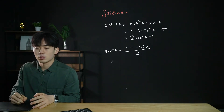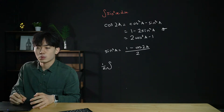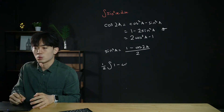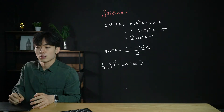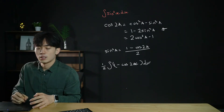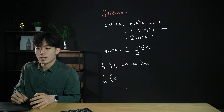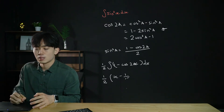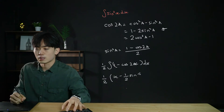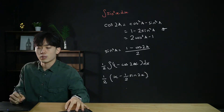When we integrate sin²x we can substitute it for that expression. Pulling the 1/2 outside, we integrate (1 minus cos 2x) dx. Integrating cos we get minus sine, but we also have the factor of 2, so we get (1/2) times (x minus (1/2)sin 2x) plus c.